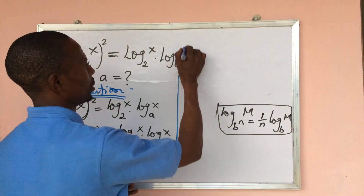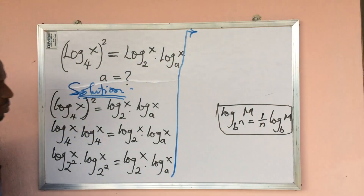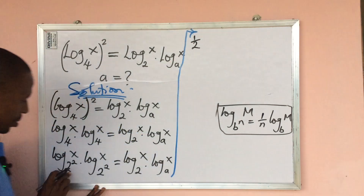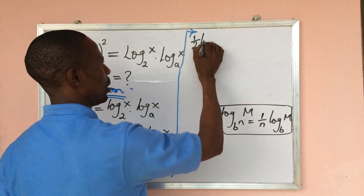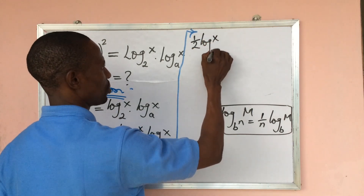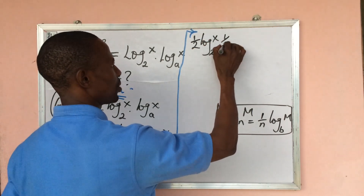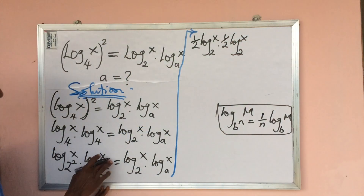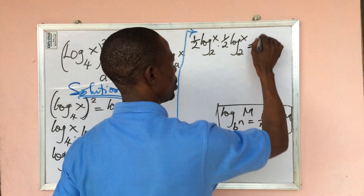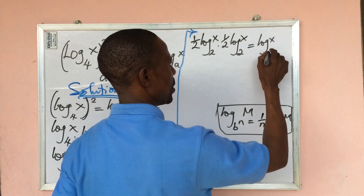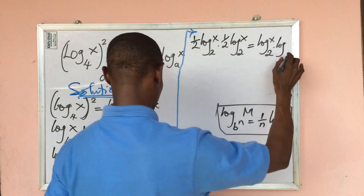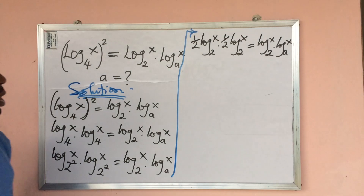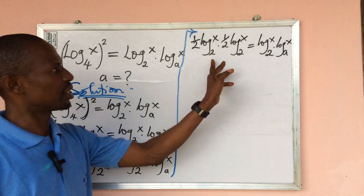Applying the rule, we rewrite as: one-half log x base 2 times one-half log x base 2, equal to log x base 2 times log x base e. At this point, we are having log x base 2 appearing multiple times on both sides.